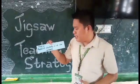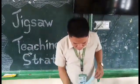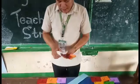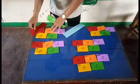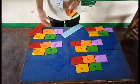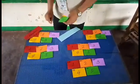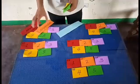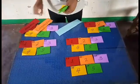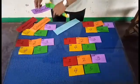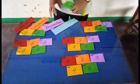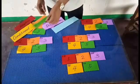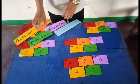Step number six: assess all students on all the content. In the original groups, student number one discusses negation while the other four members take notes. Student number two discusses conjunction, student number three discusses disjunction, student number four discusses conditional, and student number five discusses biconditional. The rest of the members listen and take notes on each topic.